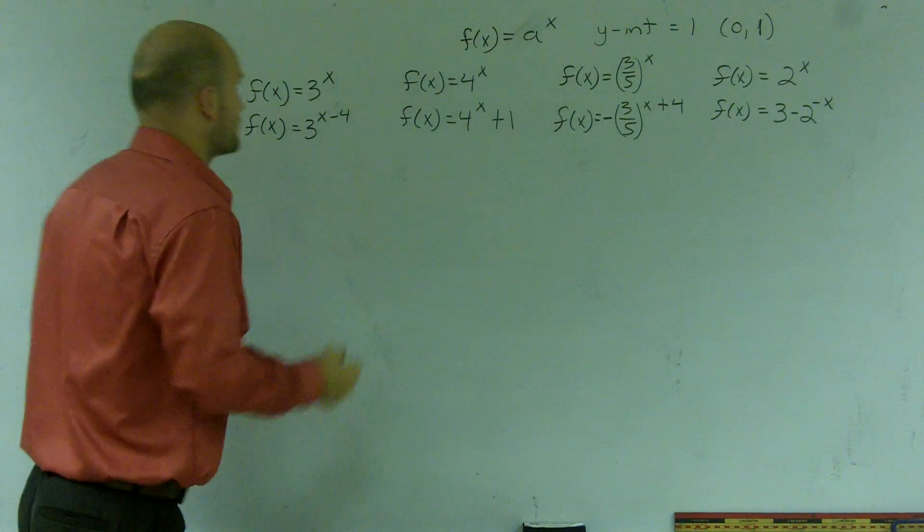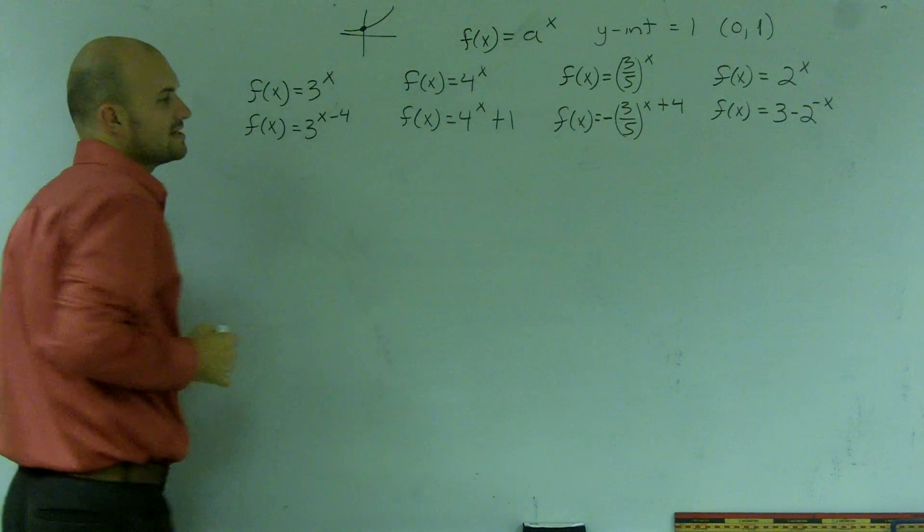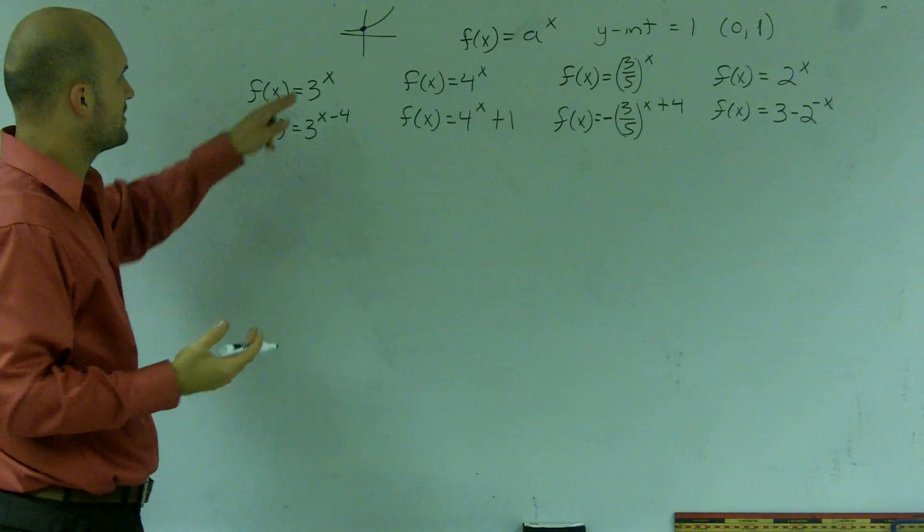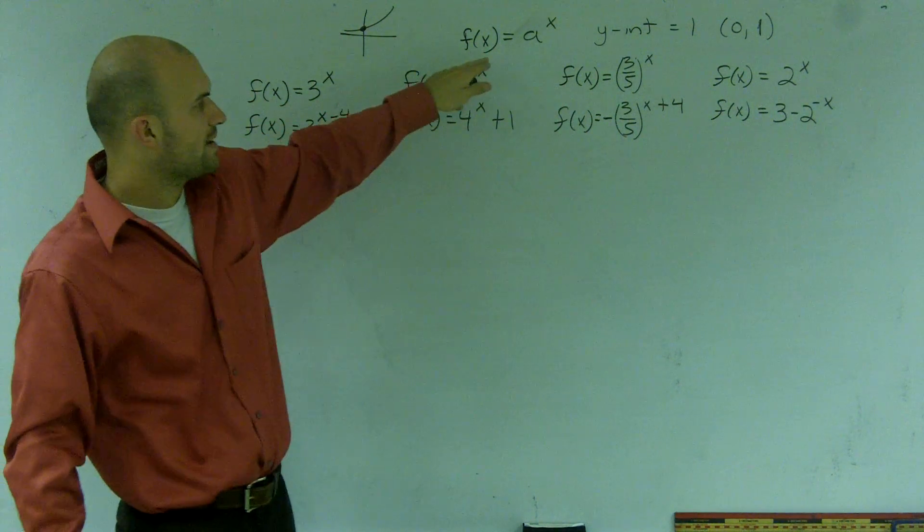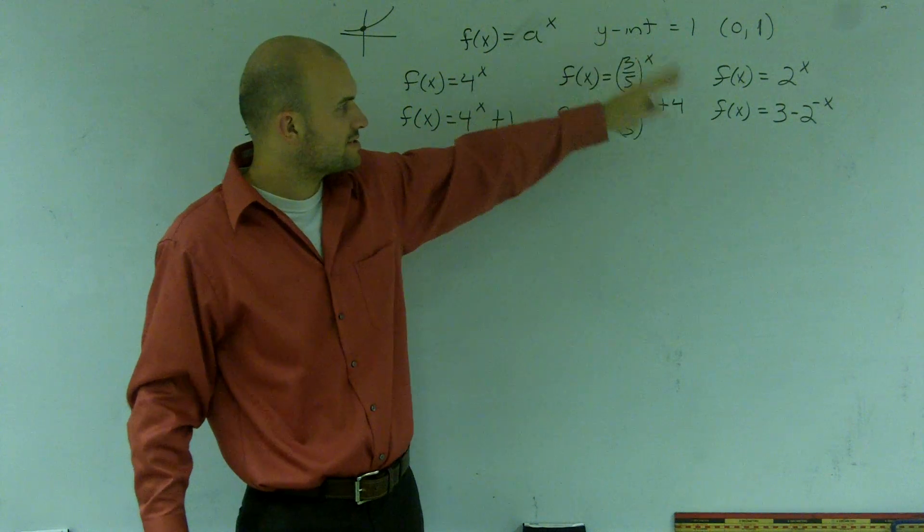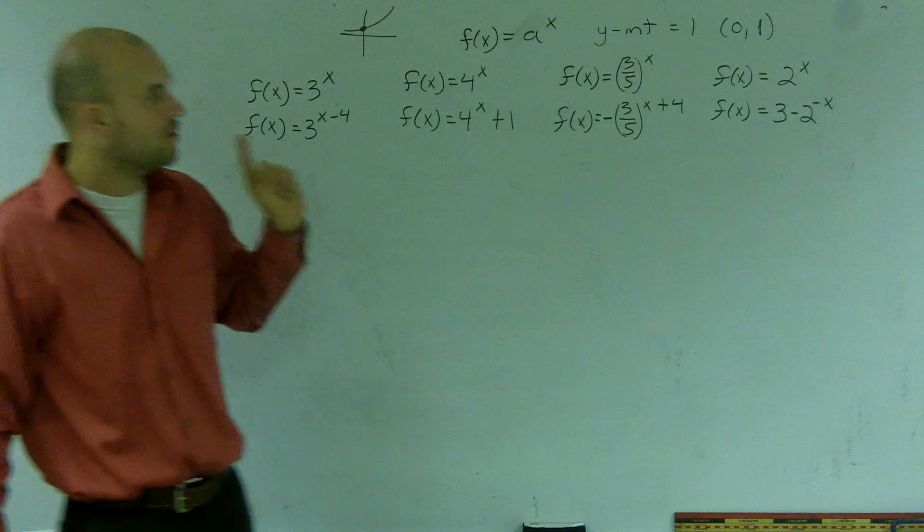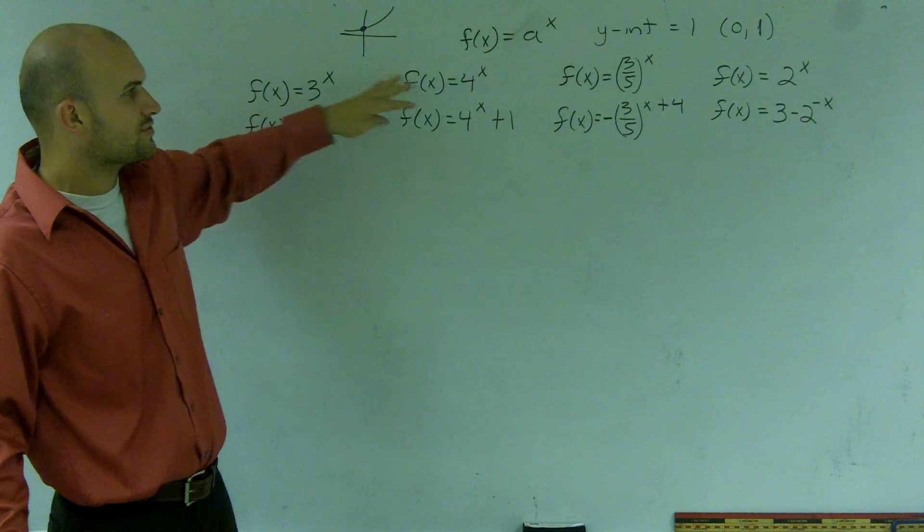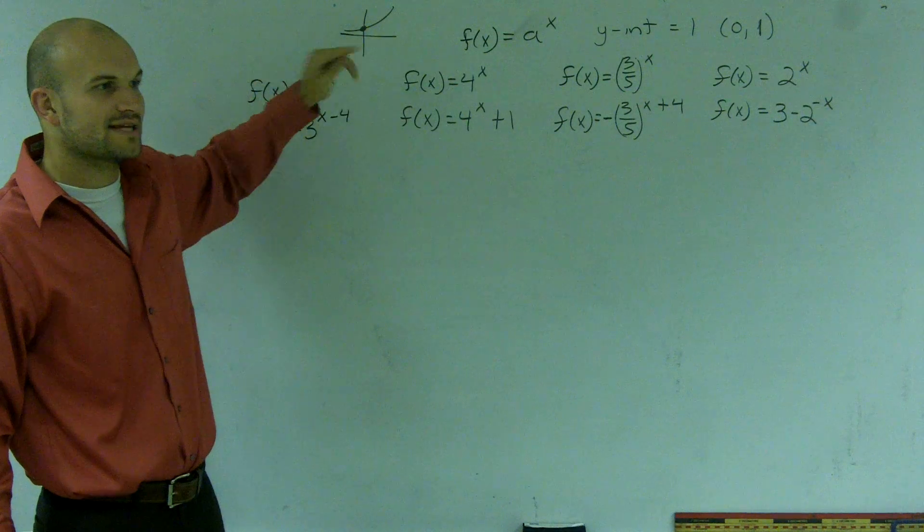And that's kind of important because our graph is going to look something like this, where it's always going to cross at (0,1). And then why is that? Well, because if I make 0, if I do 3 raised to the 0, 4 raised to the 0, 3/5 raised to the 0, or 2 raised to the 0, it doesn't matter. Whatever I raise to the 0 power, it's always going to give me 1. So therefore, that's why even though these graphs will be different, the parent graph is always going to kind of be the same.